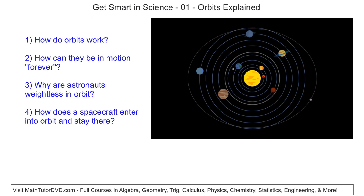Hello, welcome to Get Smart in Science. Here we're going to explain what an orbit is. I have a few key questions that I want to point out that we're going to answer, and the goal is to take something seemingly complicated and break it down so that it's understandable in only a few minutes. First, we're going to talk about how an orbit works, how orbits can exist and go on seemingly forever, why astronauts seem weightless in orbit, how spacecraft enter orbit and stay there, and a little bit about the history and evolution of those ideas.